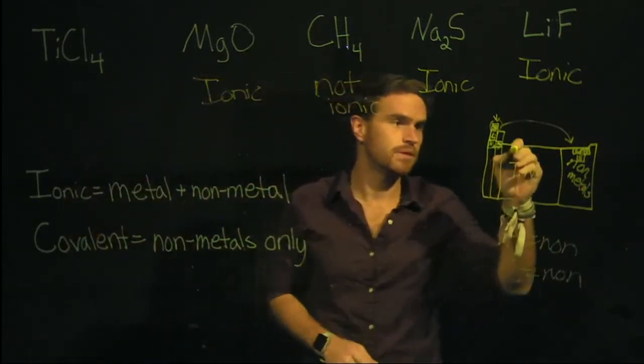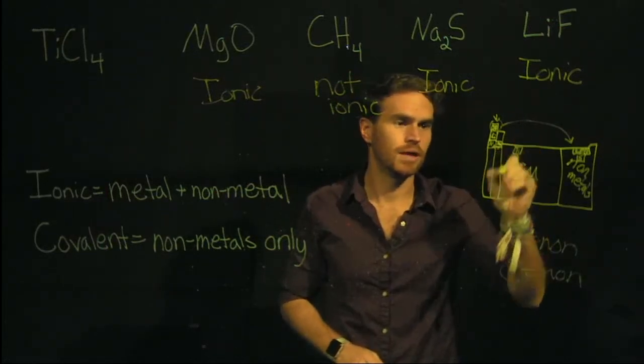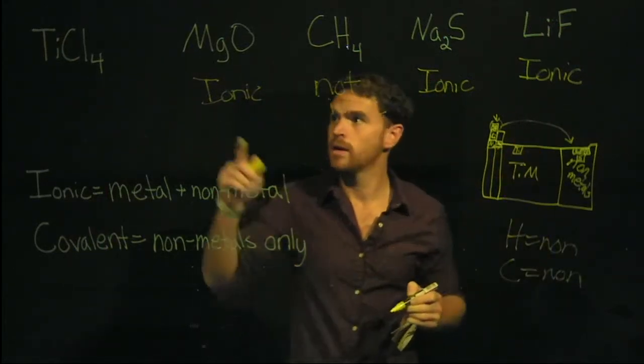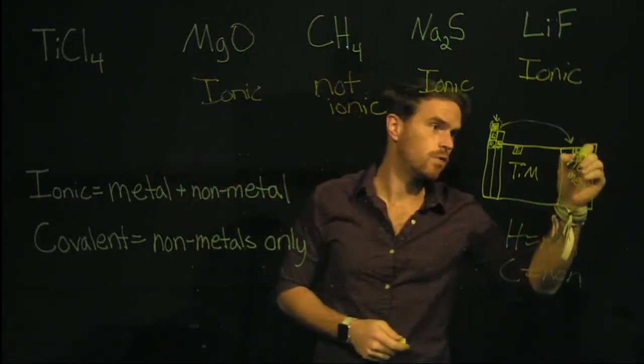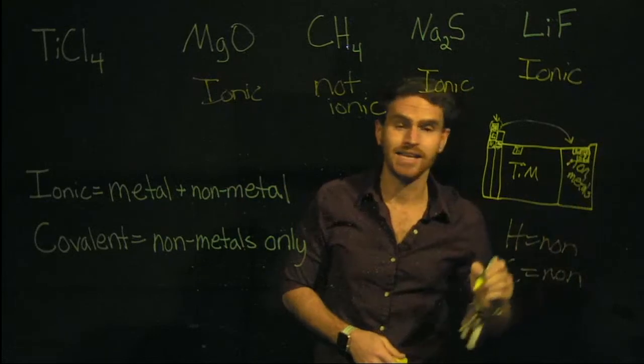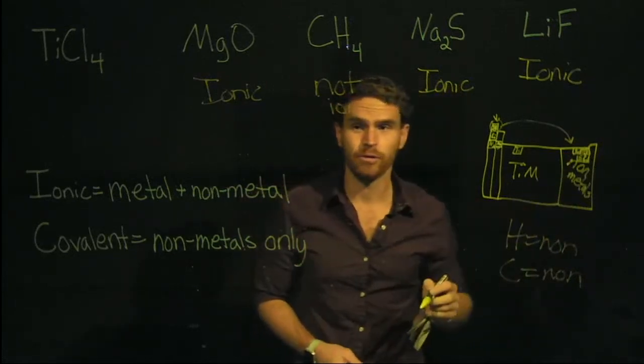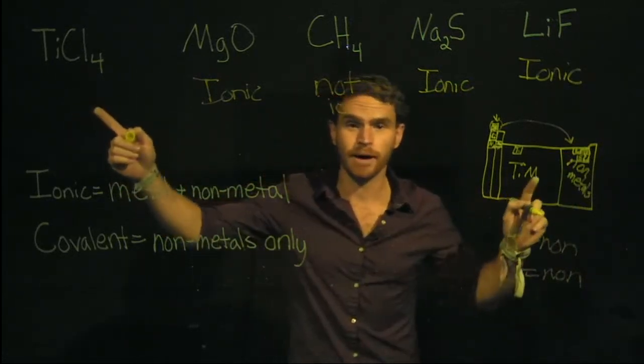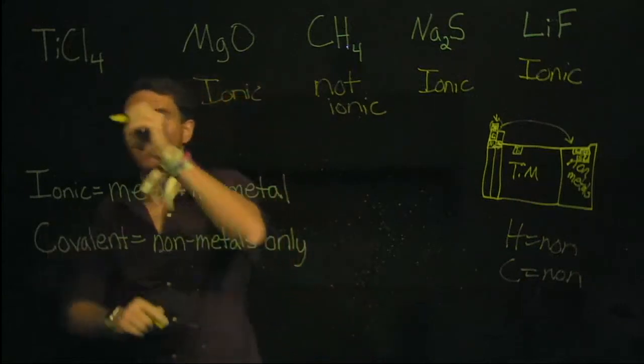Titanium is right around here on the periodic table. It is a transition metal. Chlorine is over here, underneath fluorine, and it is a halogen, or a non-metal. Therefore, we have a metal and a non-metal forming an ionic compound.